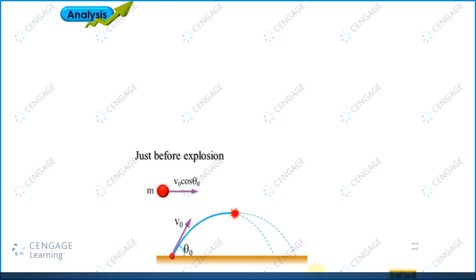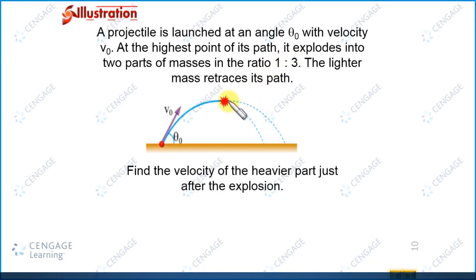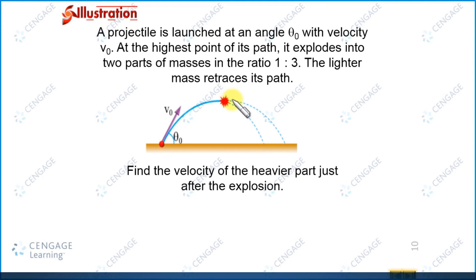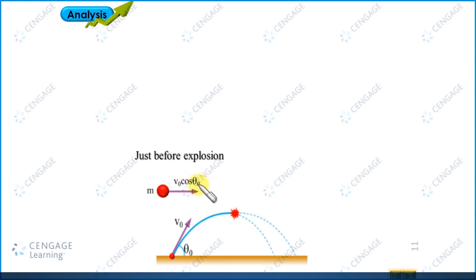M is the mass of the projectile. At this point it explodes into two parts with mass ratio 1 to 3. Let us assume the mass of the lighter part is m naught and the mass of the heavier part is 3m naught. That means m naught equals m by 4 and the heavier mass 3m naught equals 3m by 4. The lighter mass m naught retraces its path, so its velocity just after explosion equals v naught cos theta naught but in the leftward direction.